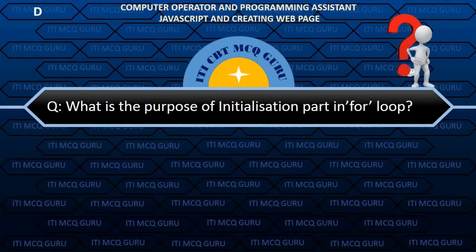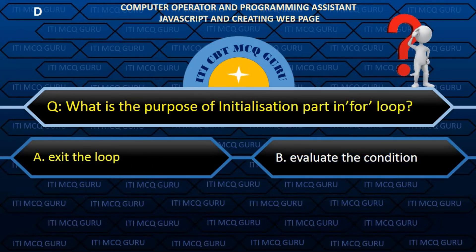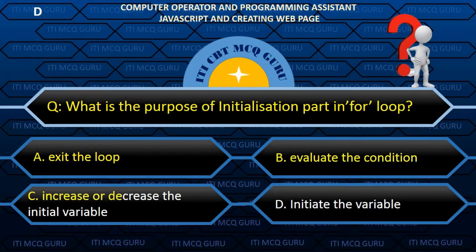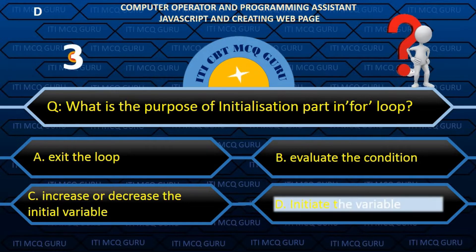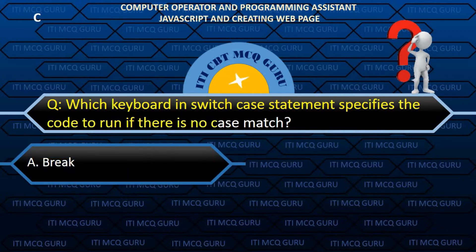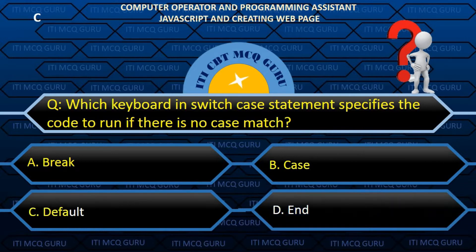What is the purpose of the initialization part in a for loop? B. Initiate the variable. Which keyword in a switch case statement specifies the code to run if there is no case match? C. Default.